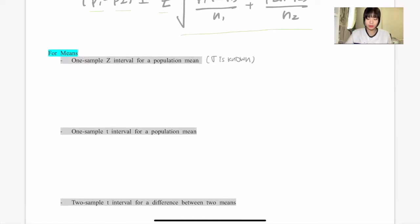When computing confidence intervals for one-sample Z interval for population mean, this Z interval will be used when you know the population standard deviation σ.